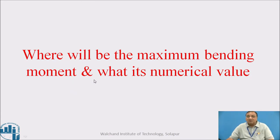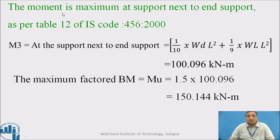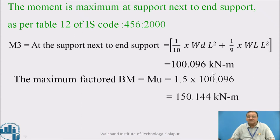Where will the maximum bending moment occur and what is its numerical value? The moment is maximum at the support next to the end support. As per Table 12 of IS456-2000, M3 = (1/10)·WD·L² + (1/9)·WL·L² = 100.096 kN·m. The maximum moment is usually considered for assuming the sections. Therefore, the maximum factored bending moment MU = 1.5 × 100.096 = 150.144 kN·m.